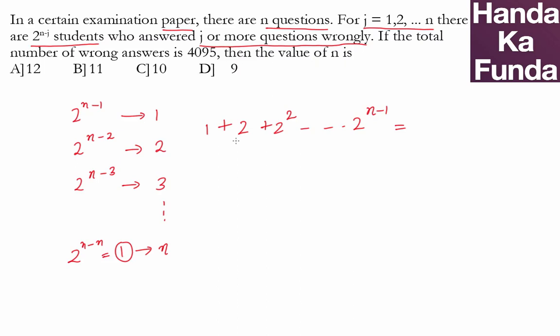1 plus 2 is 3. 1 plus 2 plus 2 square, or 1 plus 3 plus 4, so this was 3. Then 1 plus 2 plus 4 is 7. The next value, if you also include 2 cube in it, what will that be?